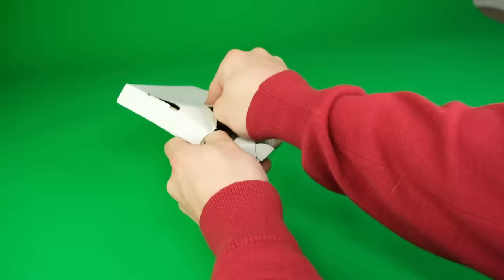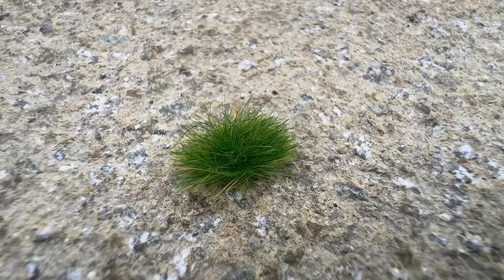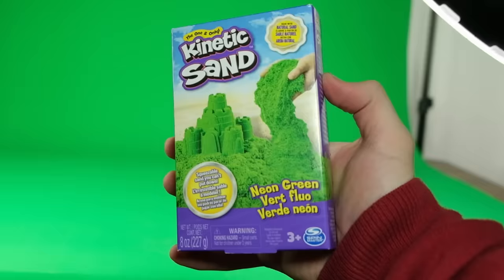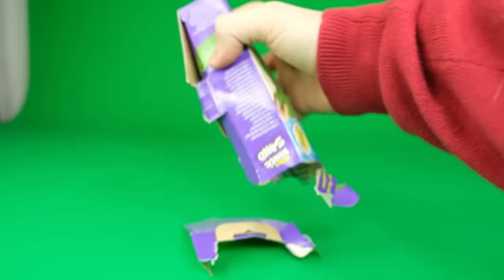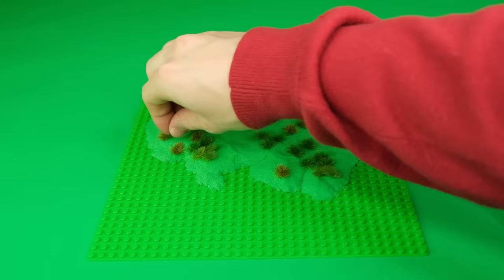So I got another package in the mail. And this time it's full of these tiny realistic grass pieces. And just like the bricks from earlier, these are a fraction of the size of the real thing. I also got this green kinetic sand. So we can use that as a first base layer of grass.